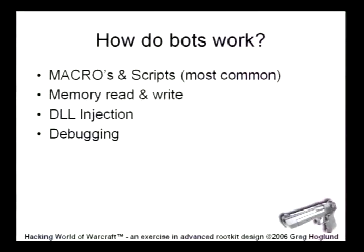There are a couple of different ways bots work. Macros and scripts are the most common — tools like AC Tool and Macro Machine. They're very easy to write because their interface is completely at the level of the user: clicking a button, sampling a pixel. They get more complex when you start reading and writing memory locations, such as reading XYZ coordinates or float values from certain memory offsets. DLL injection is the next stage, but unfortunately it's very easy to detect. And then there's debugging — I did write a bot last year that was just a debugger that attached to WoW.